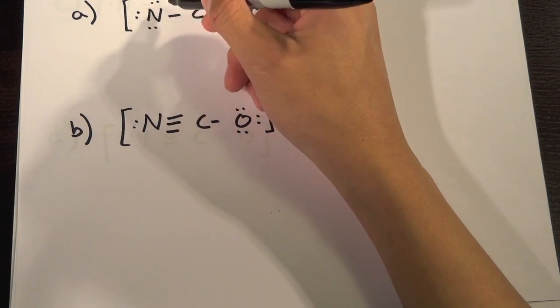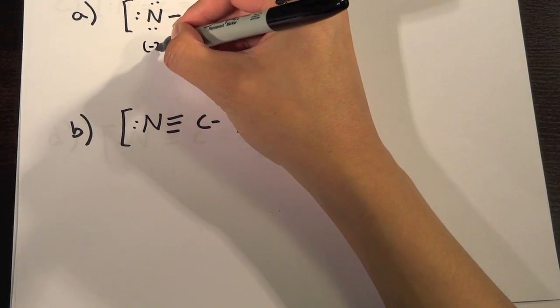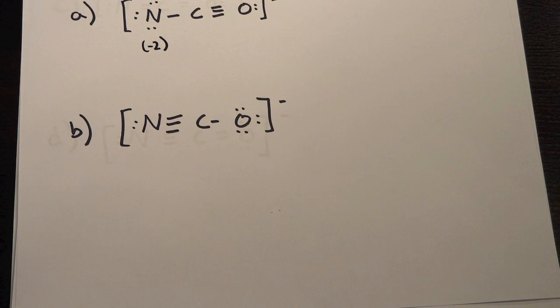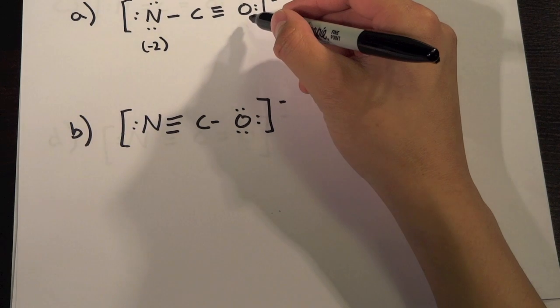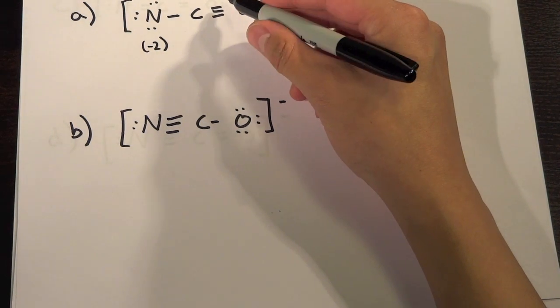So this would have minus two right. This, the carbon is in group four, it has four bonds around it so it has zero. And the oxygen is in group six and it has three bonds to it and also has two electrons so it'll be plus one.